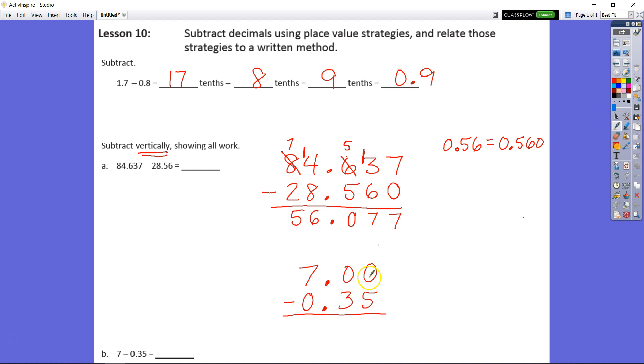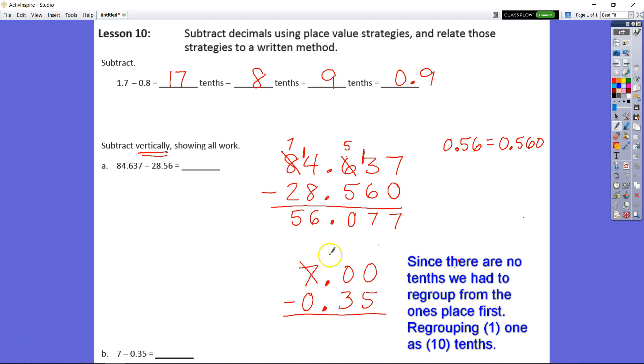If you have 0 hundredths you can't take away 5 hundredths. You have to regroup so we're going to take this 7 or 7 wholes and we're going to take one of those wholes and regroup it as 10 tenths.